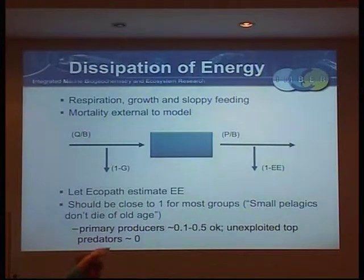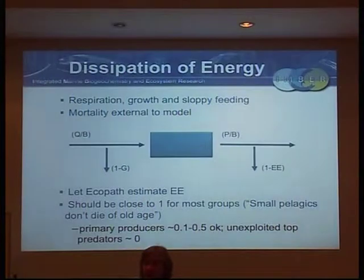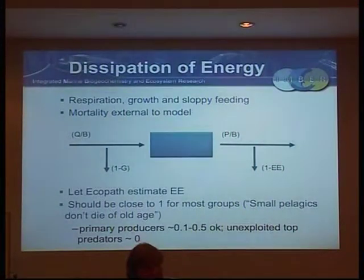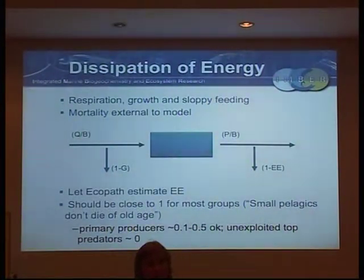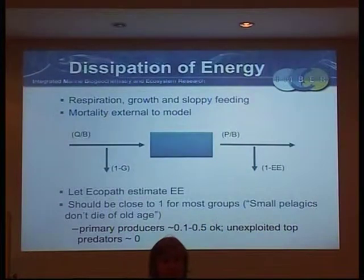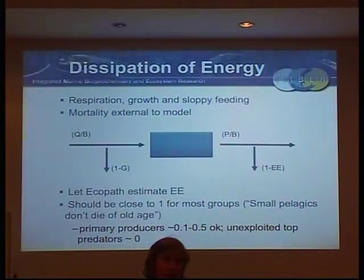At the top end, the very top predators, most of those EEs would be close to zero, because they don't get eaten by much. It's a question across most end-to-end models about those top predators - whether it's Atlantis, or Osmose, or EWE, or whatever. We are missing knowledge on the fundamental thing that controls sharks. Every one of the models in the world wants to fill the world with sharks. We don't know what controls those top trophic levels - it's not predation, it's not food, there's usually enough food around for them. So it'll be some other mechanism that we don't know.